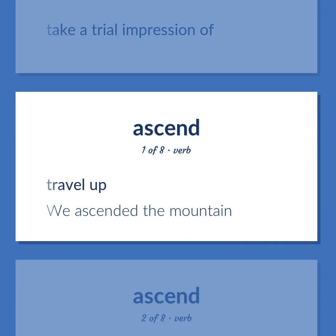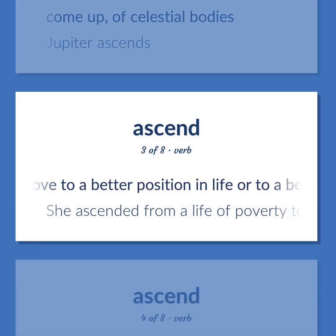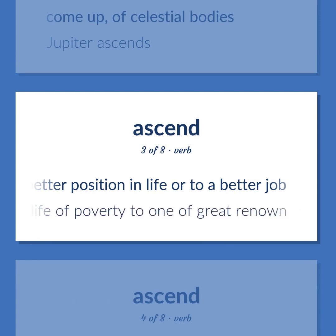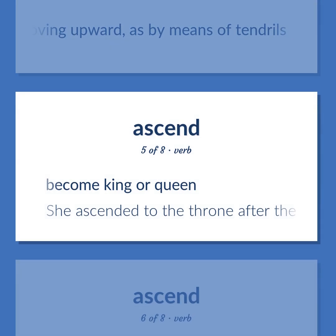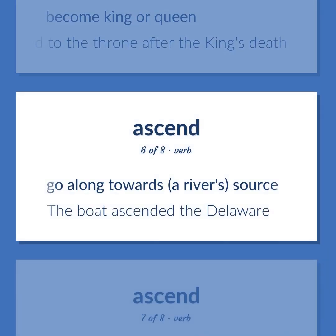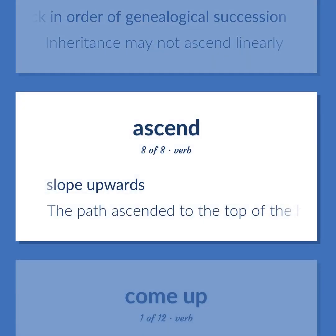Ascend. Travel up — we ascended the mountain. Come up, of celestial bodies — Jupiter ascends. Move to a better position in life or to a better job — she ascended from a life of poverty to one of great renown. Appear to be moving upward, as by means of tendrils. Become king or queen — she ascended to the throne after the king's death. Go along towards a river's source — the boat ascended the Delaware. Go back in order of genealogical succession — inheritance may not ascend linearly. Slope upwards — the path ascended to the top of the hill.